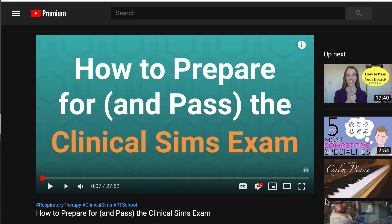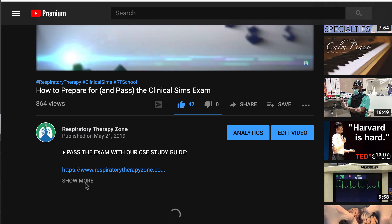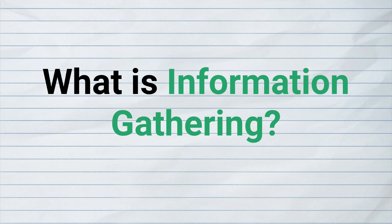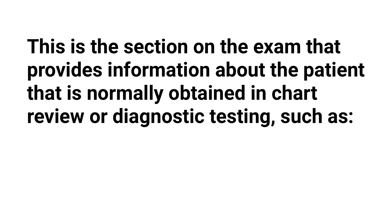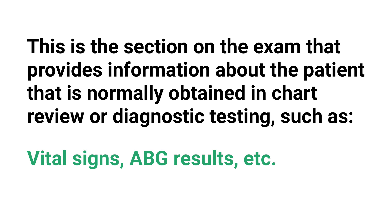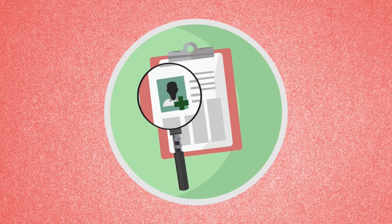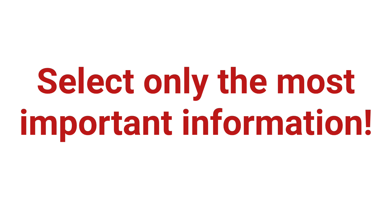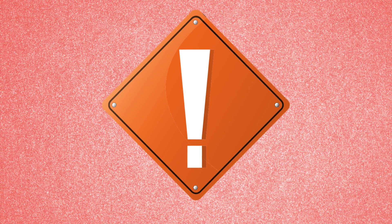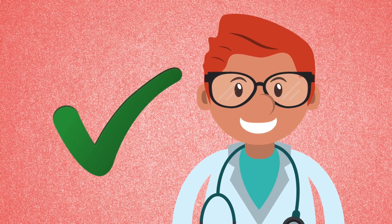First and foremost, if you're new to the channel or you're not familiar with the structure of the clinical simulations exam, we actually just released a massive video that can help teach you everything you need to know about it. So really quick — what is information gathering? This is the section on the exam that provides information about the patient that is normally obtained in chart review or diagnostic testing, such as vital signs, ABG results, etc. This is the section you'll be directed to in order to find out more about the patient. They will list out 15 to 20 parameters for you to choose from. You must select only those things that are important for this patient at this particular time given what you know, and avoid selecting anything that could be dangerous for the patient. Now let's get into the tips.